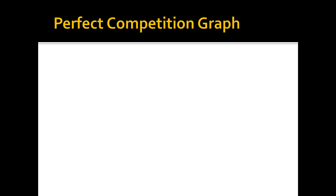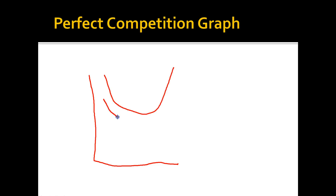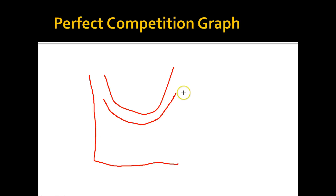An important thing to know for the AP test is the graph of a perfectly competitive firm. The graph starts with the ATC and AVC curves. The average total cost curve is a parabola with an absolute minimum point — it's initially downsloping because production becomes more efficient as the cost of producing goods decreases, but costs eventually rise as overcrowding and other effects occur. The average variable cost curve is similar, but with the minimum point shifted slightly to the left. You don't need to draw an average fixed cost curve; it's modeled by the difference between the average total cost and the average variable cost — that gap is the average fixed cost.